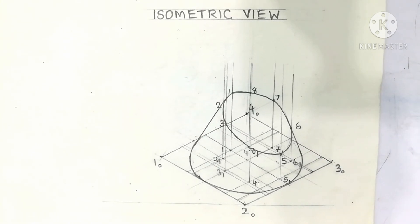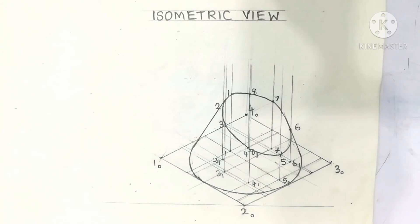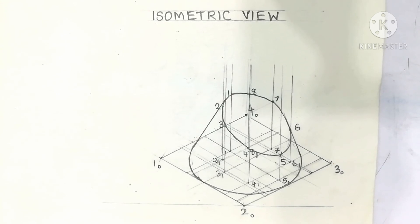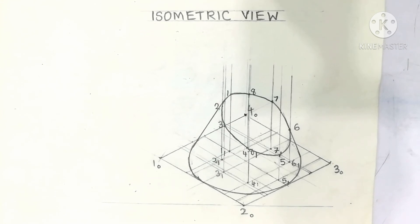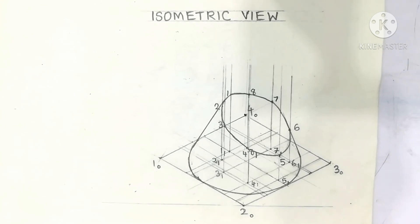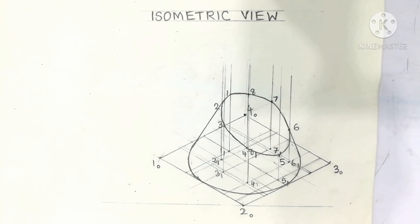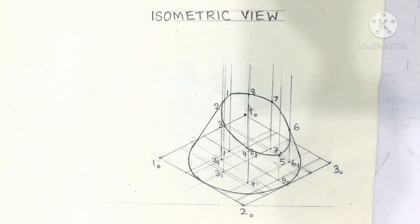The detailed procedure for drawing this is given in a separate video. The link is provided in the description box. Please click the link to learn how to draw the truncated cone using the isometric procedure, called isometric view.